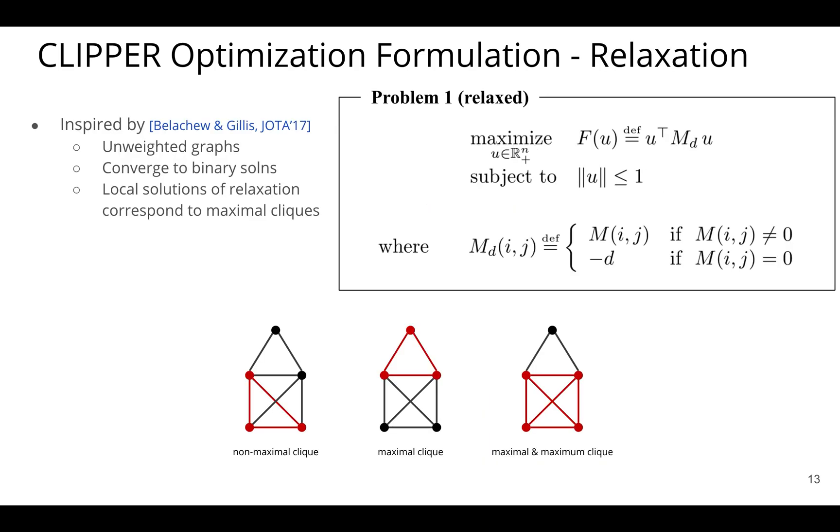And so what we do is we relax it using some continuous relaxation. And before we talk too much into the details there, the observations I would like to point out is that this relaxation was inspired by a 2017 work by Belachew and Gillis, where they took the maximum clique problem for unweighted graphs, and they use this relaxation. And they found that using this relaxation, the solutions converge to binary vectors, just as in the original problem statement.